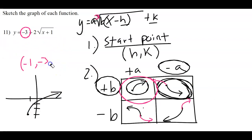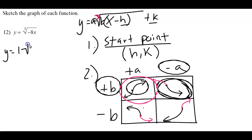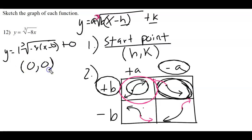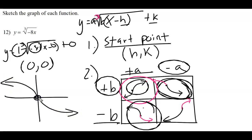One more graphing radical function — this one will include cube root tails. The A is missing so it's 1. B is negative 8. H and K are both missing so they're zero. Starting point is (0, 0). With negative B and positive A, that's the up-and-left shape. That covers graphing square roots and cube roots.